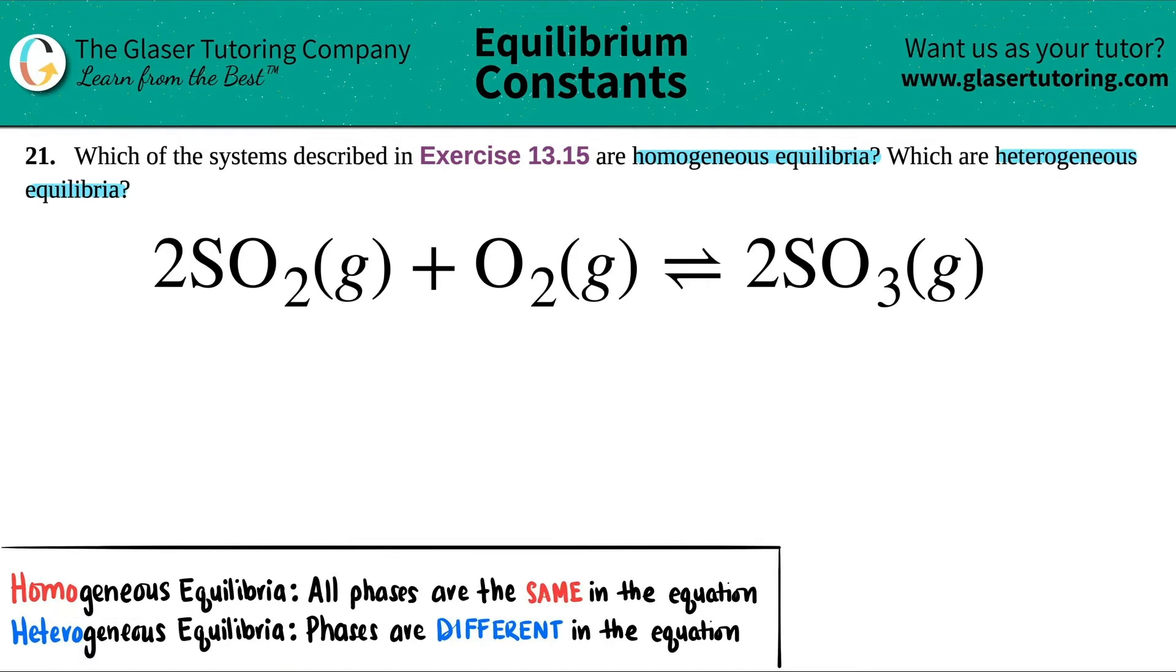Homogeneous equilibria is when all of the phases are the same. Heterogeneous equilibria is when those phases are different.